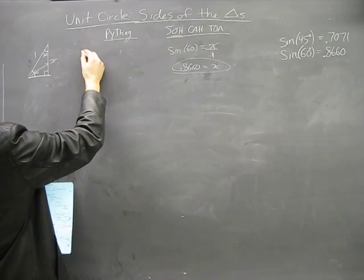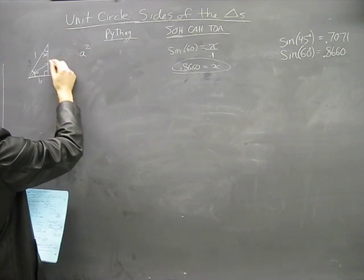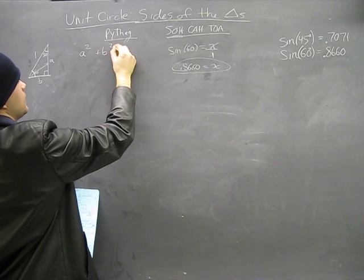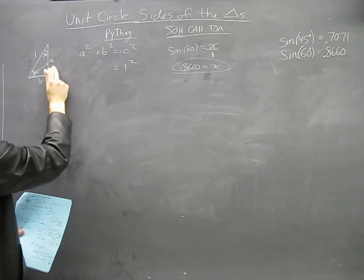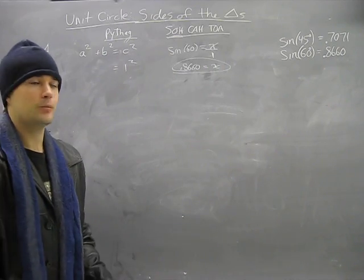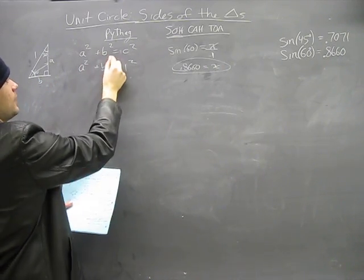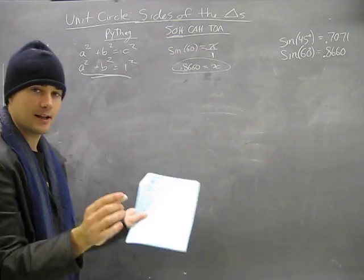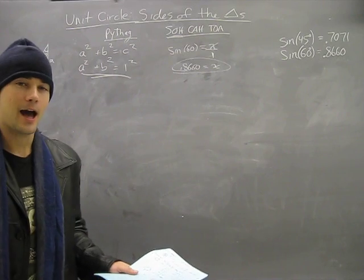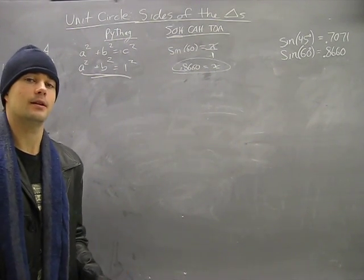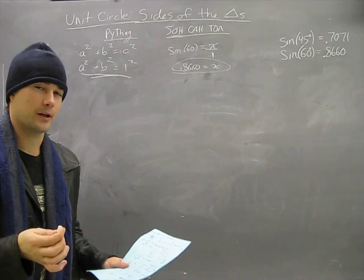Here's our theorem: side a, side b — a squared plus b squared equals c squared. Well, we know c squared is 1 squared, but these are still unknown. We have two variables and one solved. We can't get any further than that — that's an impasse. So we ask, how on earth did they do this?